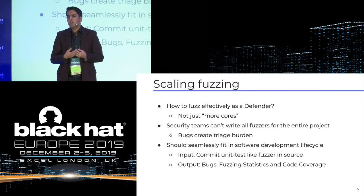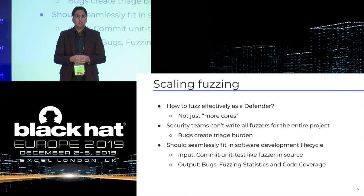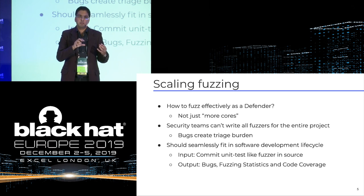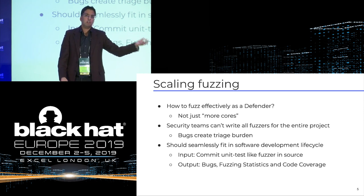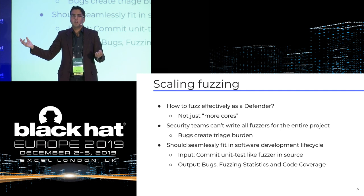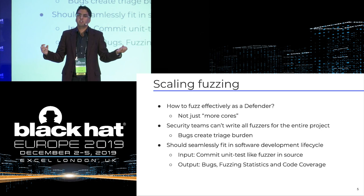Fuzzing is really scalable if it's seamlessly integrated in the software development lifecycle. Your developers don't need to know the complexity of your fuzzing subsystem. All they need to do is input a fuzzer, check it in as part of the code base, and get as output two things: the bugs they are expecting or not expecting, and ways to improve the fuzzer they have already written.